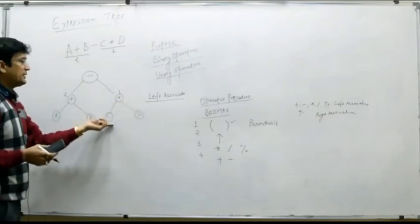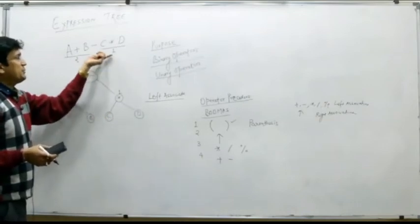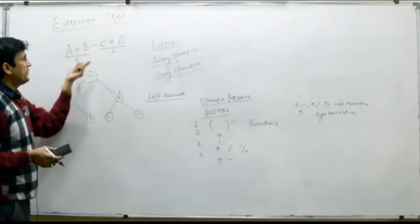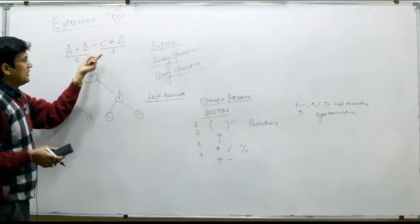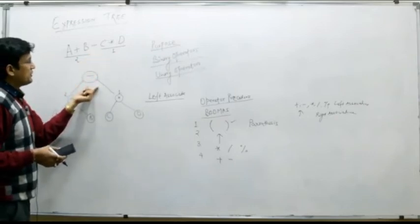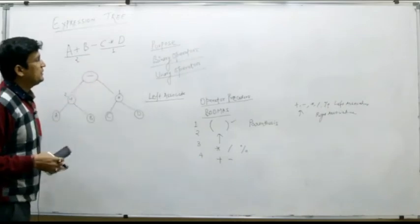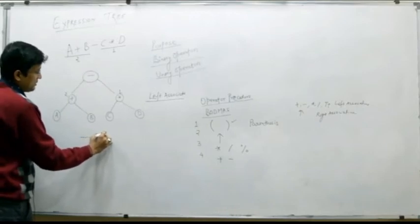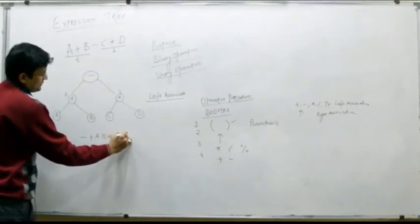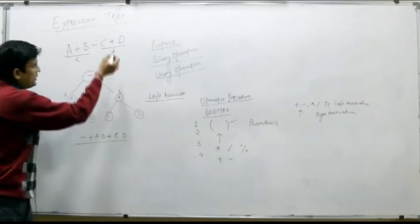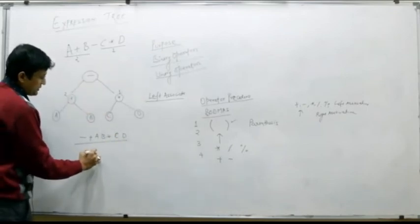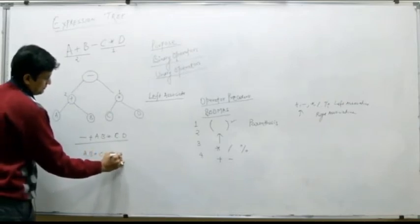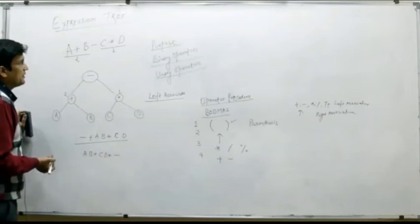We started this lecture by explaining the purpose of building the expression tree. If you find the pre-order traversal on this expression tree, you will find the prefix equivalent of the given expression. The pre-order traversal results in minus, plus, A, B, multiplication, C, and D — this is the prefix equivalent. Similarly, if you perform the post-order traversal on this tree, you will find the post-fix equivalent of the given expression.